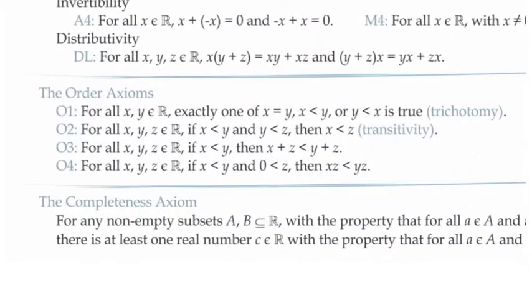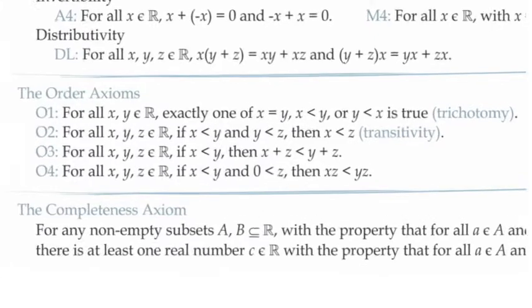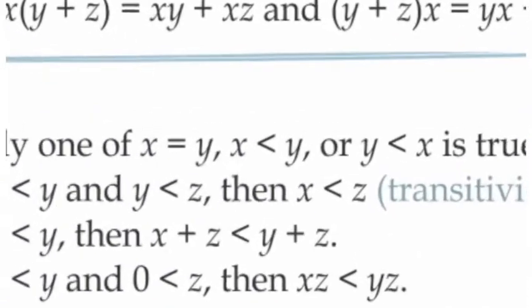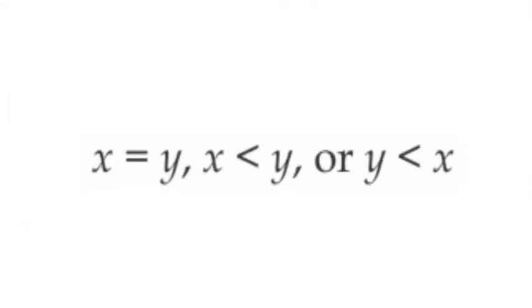The first order axiom says that between any two numbers — in this case we're going to be looking at the two numbers 0 and 1 — exactly one of the three relations, 0 is less than 1, 0 is equal to 1, or 1 is less than 0, must be true. We're trying to prove that it's the first one.